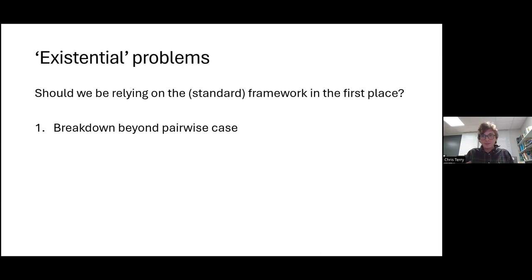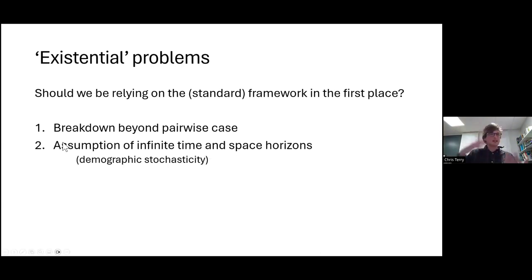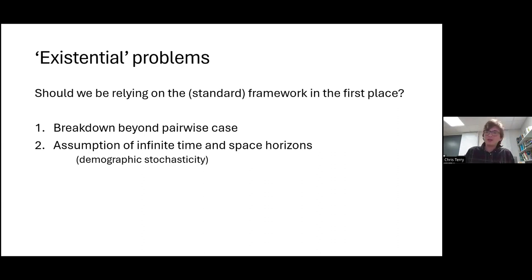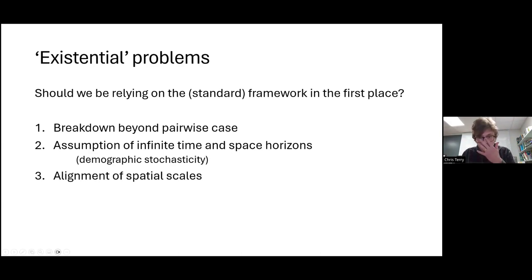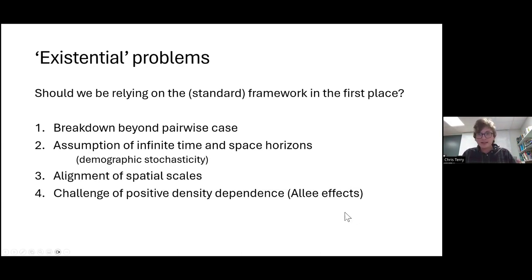Grasslands where so many of these experiments have been done are probably a bit of an exception, where everything competes with everything else quite a lot. Second, we have the assumption of infinite time and space horizons. Vanilla modern coexistence theory works by taking long-term averages, but we know the world is noisy and discrete, which can play havoc with predictions by causing extinctions of small populations despite long-term growth rates actually being positive. Third is trying to align up spatial scales — most coexistence studies assume a single homogenous patch, which can totally misrepresent the situation. And then there's the challenge of positive density dependence: the whole concept of invading from rare is pretty hard to square with Allee effects.